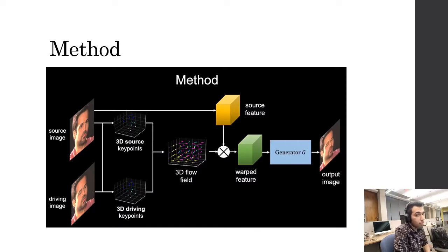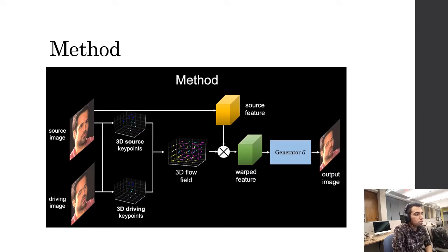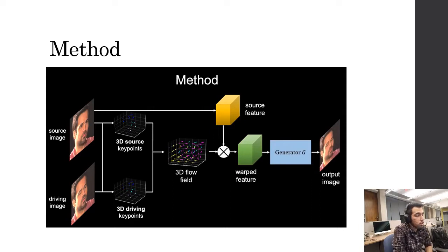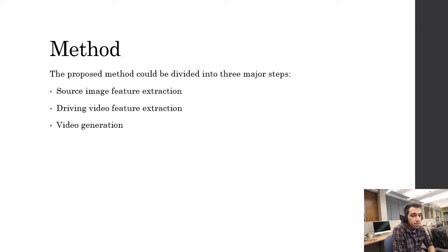Now let's take a top-down view over the model used in this paper. We pass a source image and a driving video to the network. One model extracts the source features from the source image, and another extracts the 3D source feature key points from both the source image and the driving video. By combining these and extracting additional features, we detect the 3D flow field, which we warp with the source features to generate warp features, and send them to the generator to obtain the output image. The proposed method is divided into three major steps: source image feature extraction, driving video extraction, and video generation.